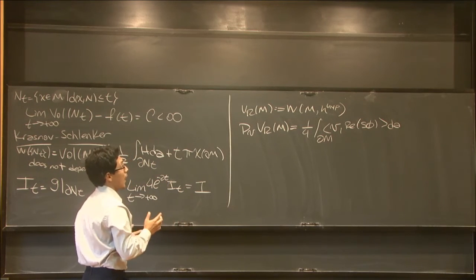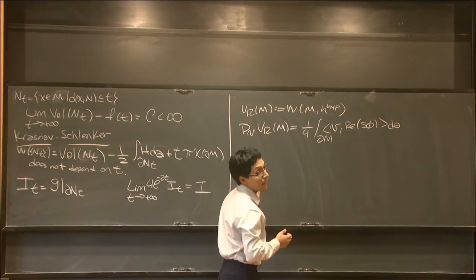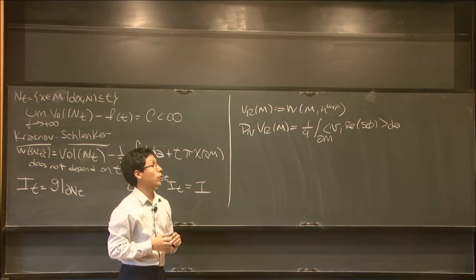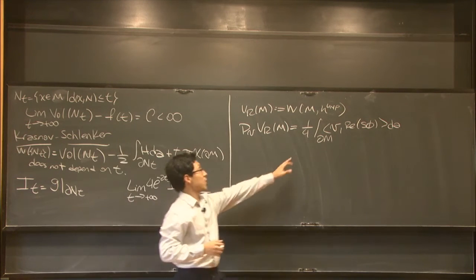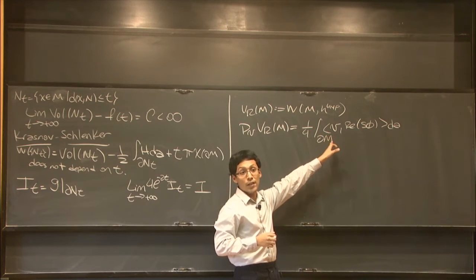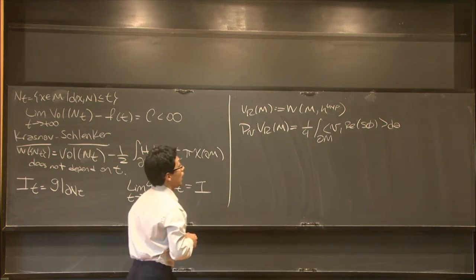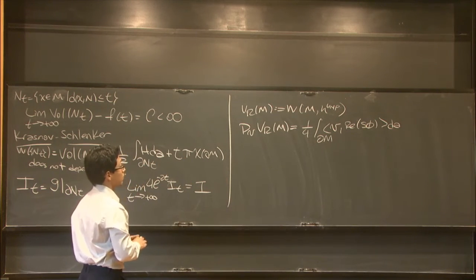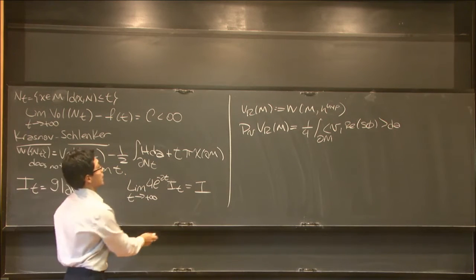Moreover, this variation happens to coincide with the variation of a Liouville action in the boundary of your manifold. So you can, if you were not satisfied by just picking the hyperbolic metric among all your options in your conformal class, you could understand that you were solving a variational problem of the Liouville action. But let me for now just define this.